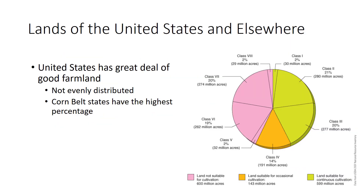The United States is fortunate to have a great deal of good farmland. Approximately 43% of our soil is rated as class 1 to 3 — soil on which nearly any crop can be grown. Most of the rest of U.S. land is suitable for some form of commercial production, such as grazing or woodlands. Good farmland is not evenly distributed over the United States. Corn Belt states have the highest percentage of good farmland, followed by northern plains states and delta states. Much of the land of the West is too mountainous for cultivated crops. According to The Economist's 2007 World in Figures, 19% of the total land of the United States is arable, compared to about 11% of the world. Other selected countries include Saudi Arabia at 1%, Canada at 5%, Mexico at 13%, and Ukraine at 56%.